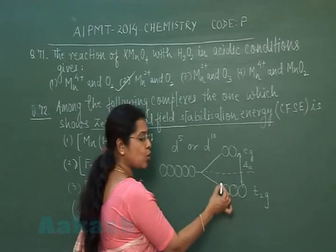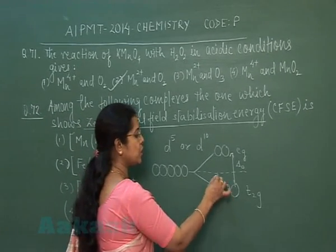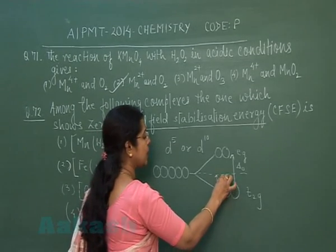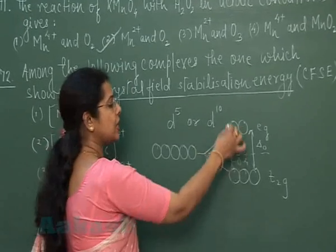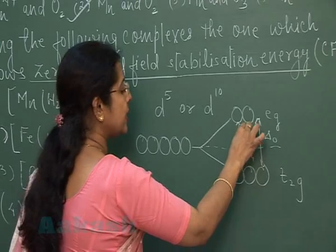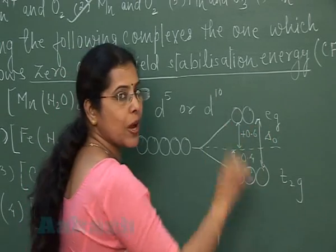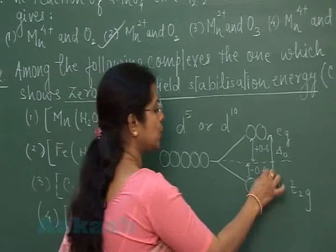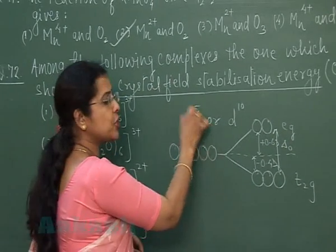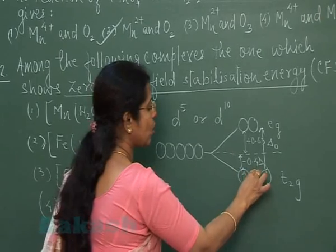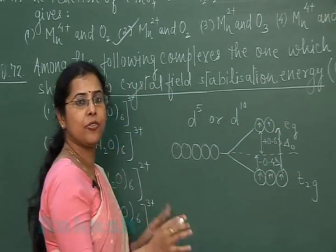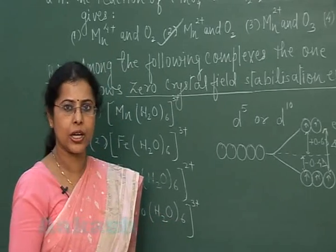If an electron fills in t2g orbital, its energy decreases by 0.4 units, and when electrons enter into eg orbital, the energy increases by 0.6 Δo. Now if configuration is d5, then three electrons will be here and two electrons will be here if it is the case of weak field ligand.